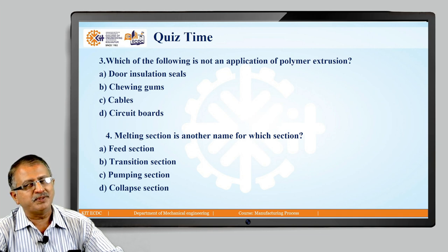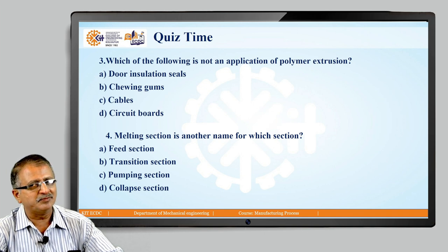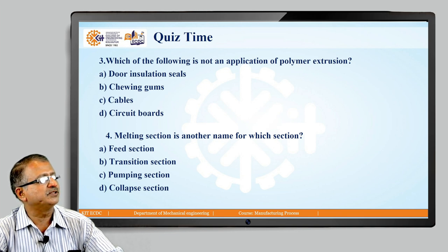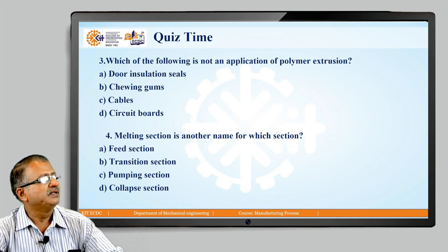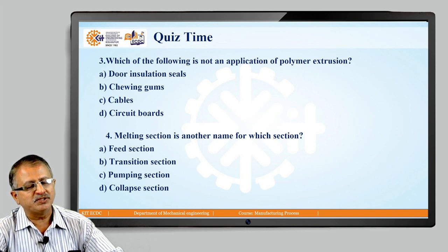Question 3: Which of the following is not an important application of polymer extrusion? Options: door insulation seals, chewing gums, cables, and circuit boards. The answer is D — circuit boards are not an application of polymer extrusion. Question 4: Melting section is another name for which section in extrusion? Options: feed section, transition section, pumping section, and collapse section. The answer is B — the transition section is also termed the melting zone of the extruder barrel.